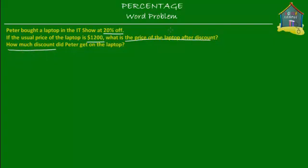So there are two questions. A: What is the price of the laptop after discount? And B: How much discount did Peter get on the laptop? So let's make a model diagram to understand things.